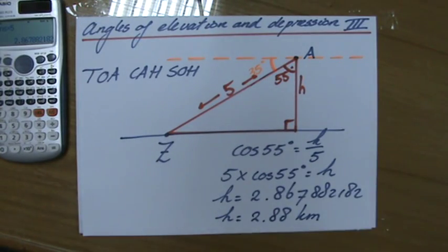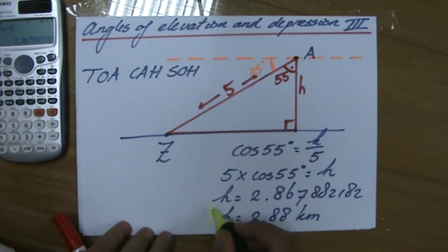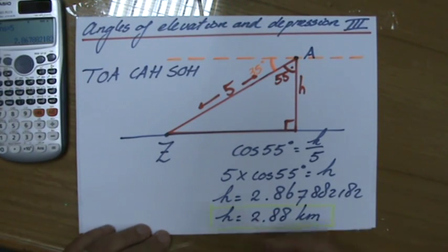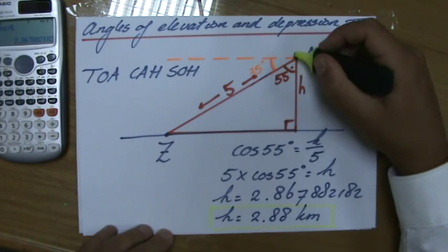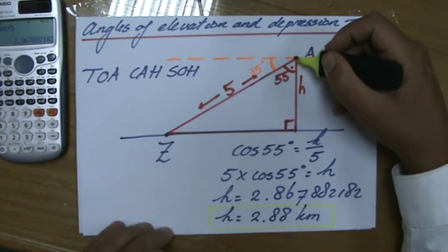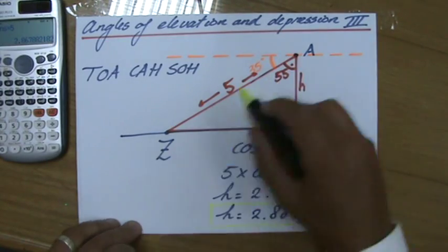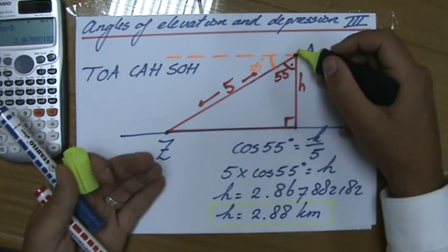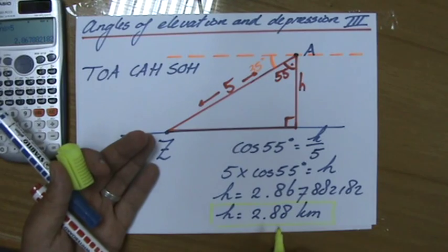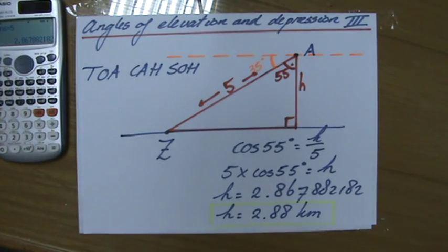Now, why would it be wrong if I would have gotten an answer bigger than 5? So why would I know I made a mistake if this answer would have been bigger than 5? Because I know that the hypotenuse is always the longest side. So I knew that my answer was going to be less than 5. 2.88 kilometers? Fantastic. I trust that.